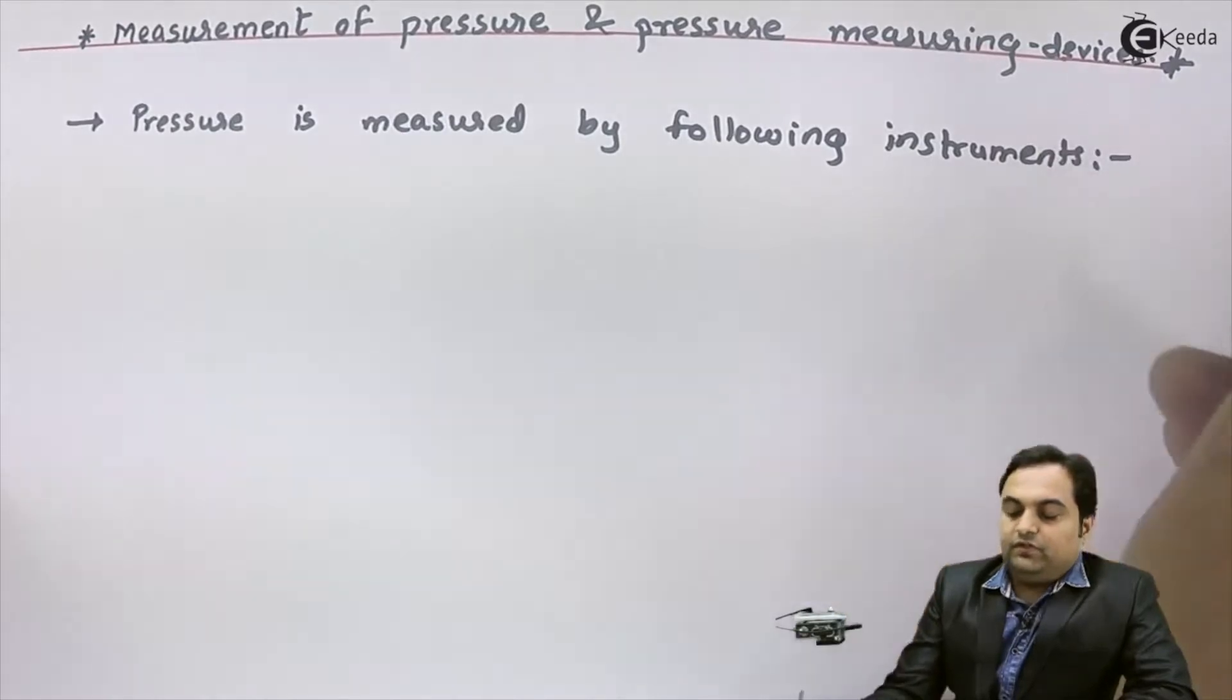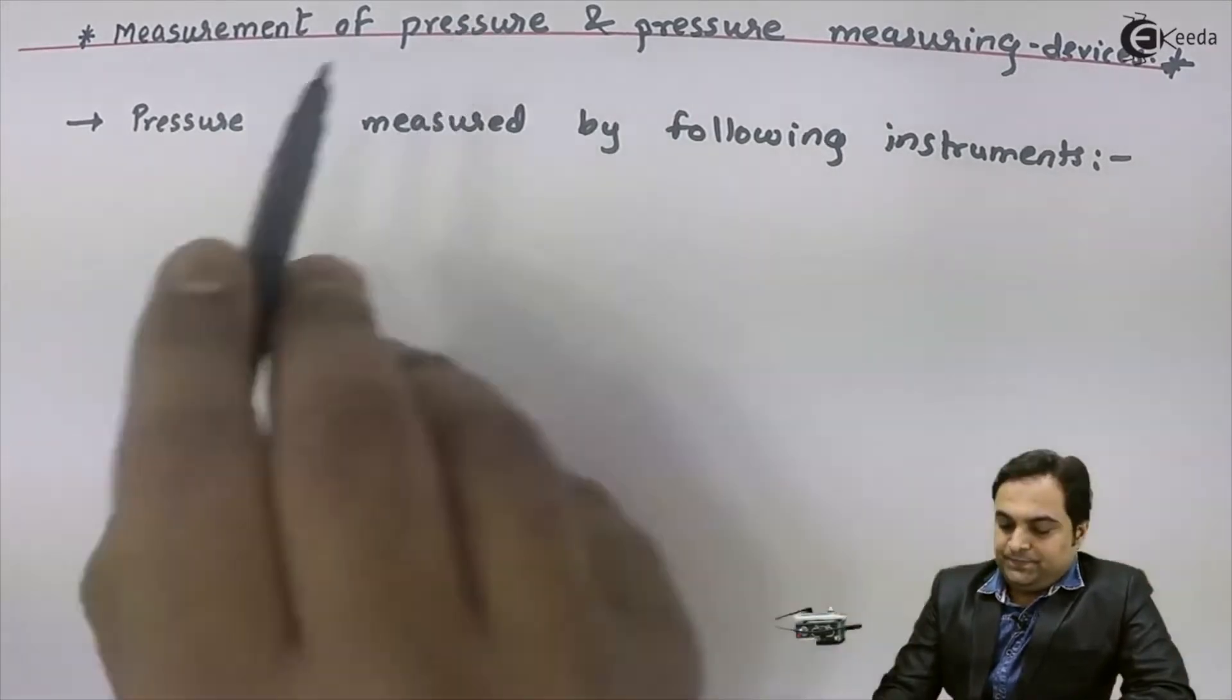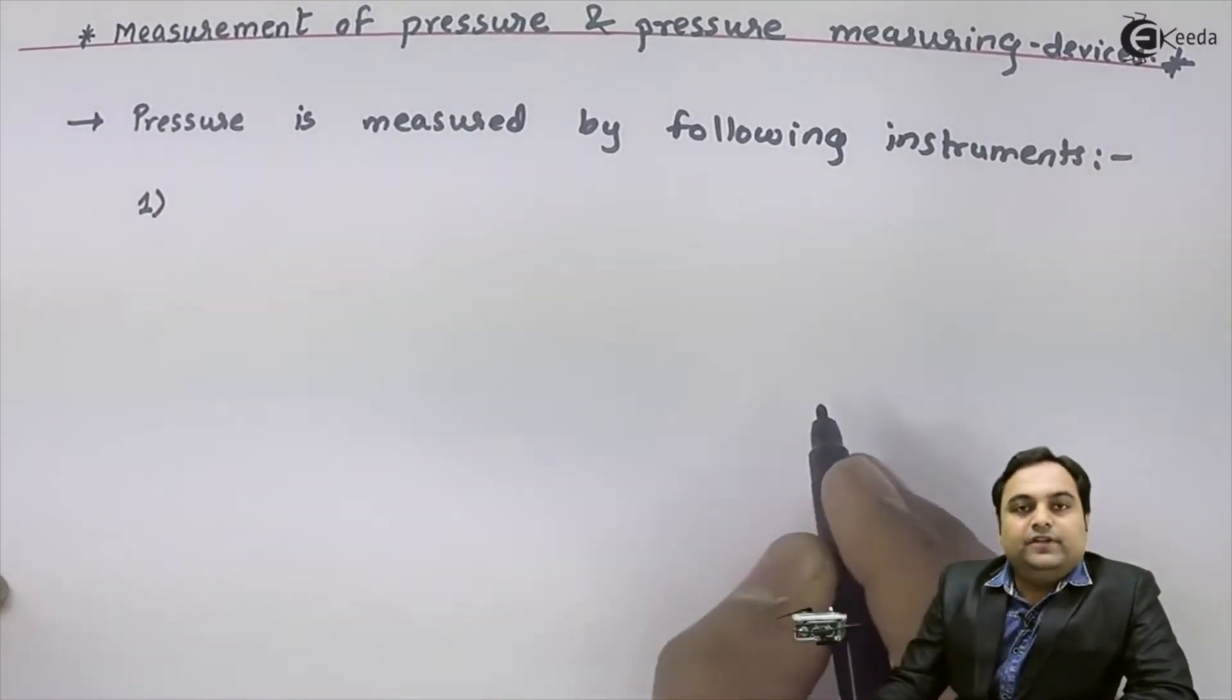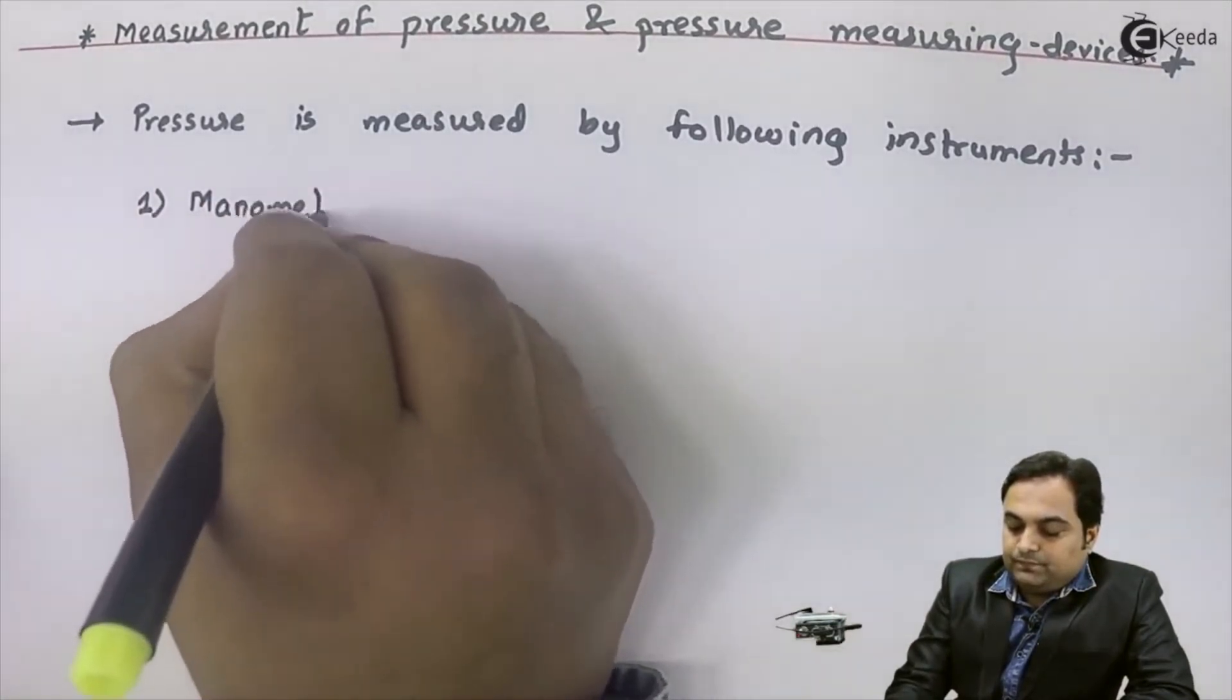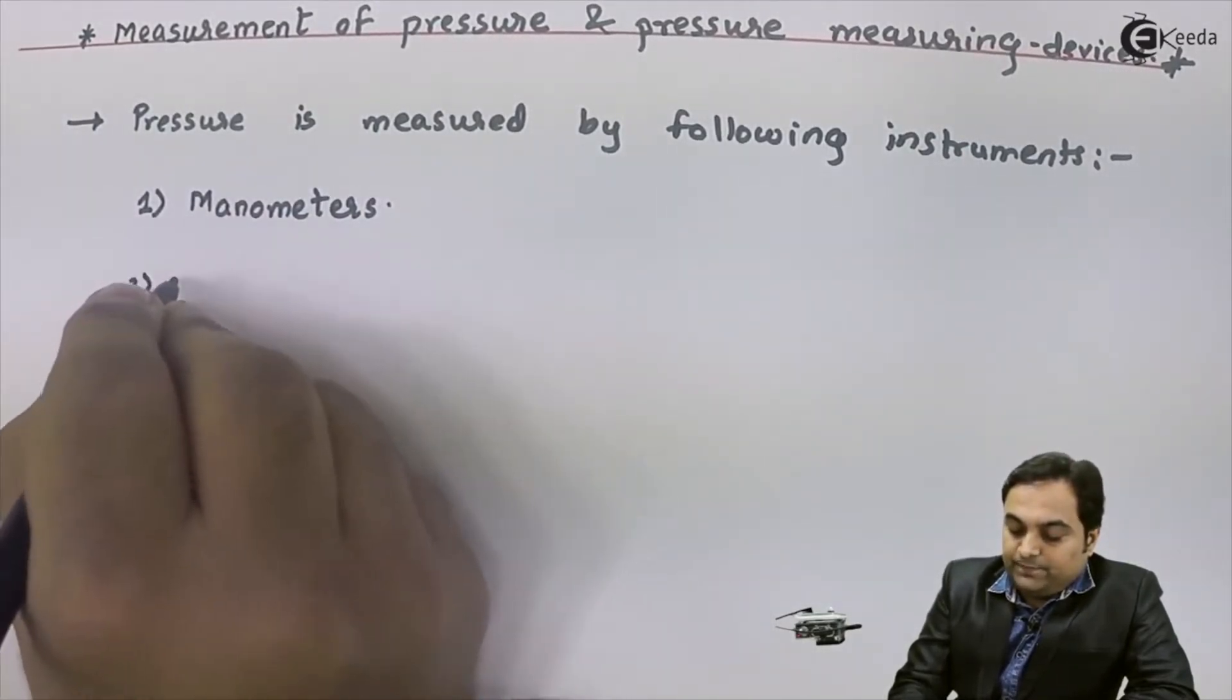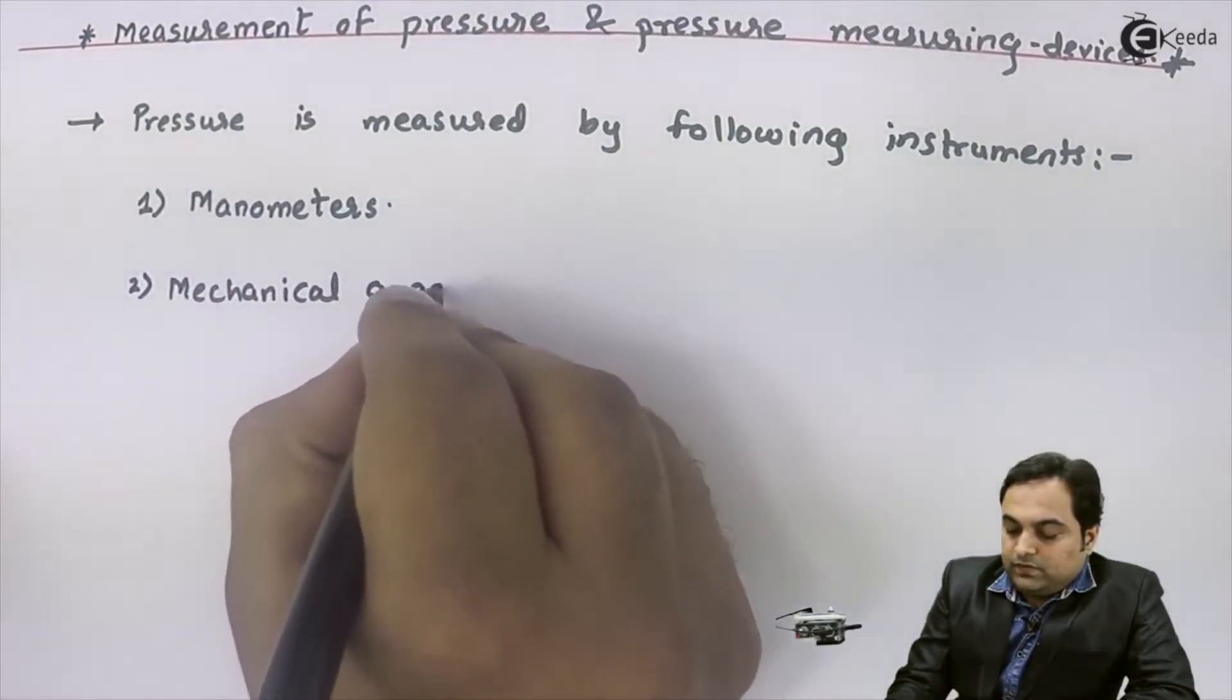instruments. Since in this video we are seeing the pressure measuring devices, I will mention the names of all the devices which we are using for measuring pressure. Now basically we have two devices: the first one is called manometers and the second category is mechanical gauges.